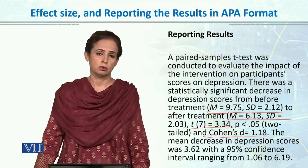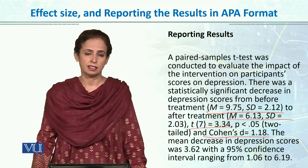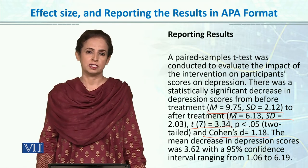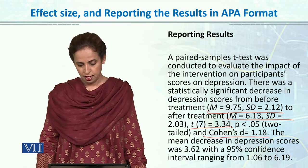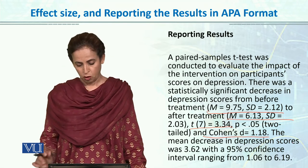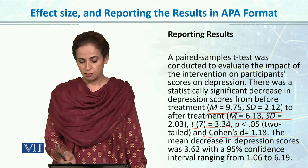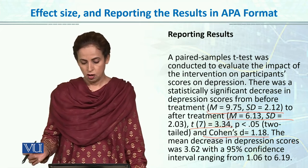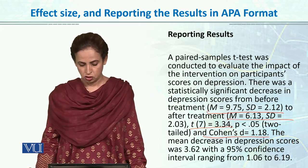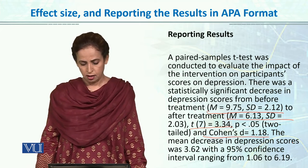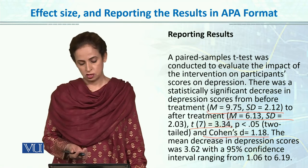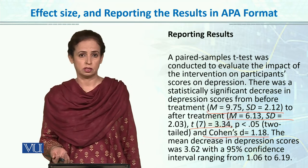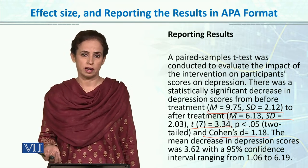More or less, it's almost exactly the same as how we reported values for the independent sample t-test. And at the end, we will state that the mean decrease in depression scores was 3.62, with a 95% confidence interval ranging from 1.06 to 6.19.